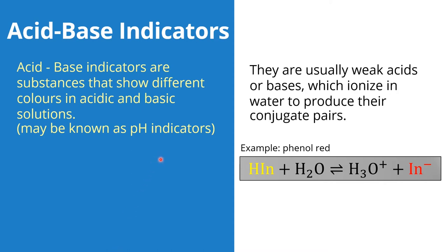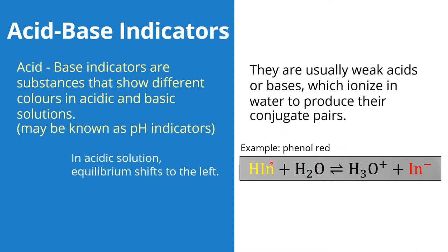Why does an indicator change color in acidic or basic solution? This is because indicators are usually a weak acid or weak base which ionize in water to produce their conjugate pairs. For example, the phenol red indicator can be shown as an equilibrium. In its acidic form it is yellow. It ionizes in water to produce a hydronium ion and its conjugate base, and the conjugate base has a red color.